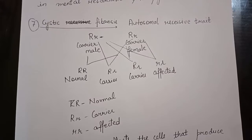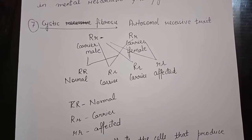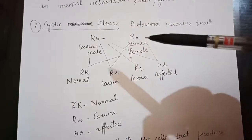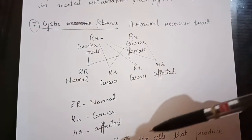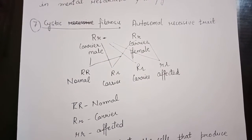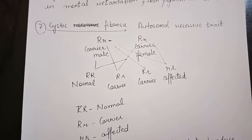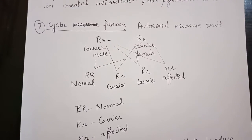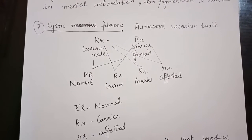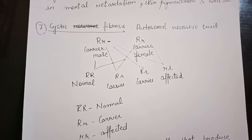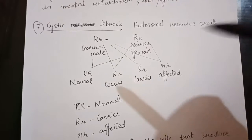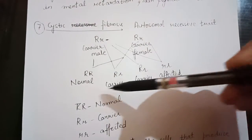Next is cystic fibrosis disease. It is also an autosomal recessive trait. It affects the cells that produce mucus, sweat, and digestive juices, causing these fluids to become thick and sticky, plugging up tubes, ducts, and passageways, especially in the lungs and the pancreas.